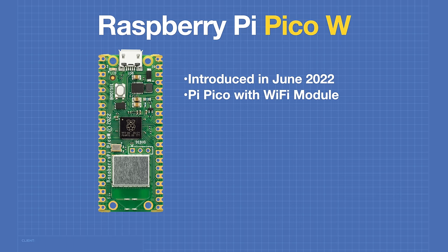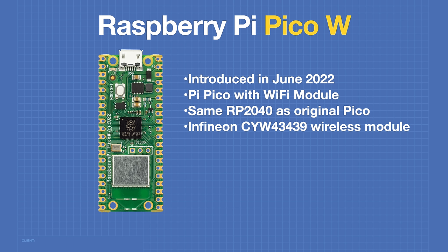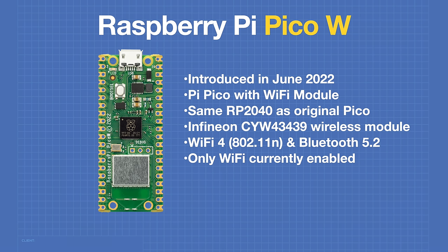The Pico-W is a Raspberry Pi Pico with the addition of a Wi-Fi module. It uses the same RP2040 microcontroller as the original Pico and has the same specifications. Its Wi-Fi capabilities are provided by an Infineon CYW43439 wireless module. This module is capable of both Wi-Fi and Bluetooth; however, on the Raspberry Pi Pico-W only Wi-Fi has been currently enabled. The Pico-W is quite inexpensive, retailing for $6 US per unit.